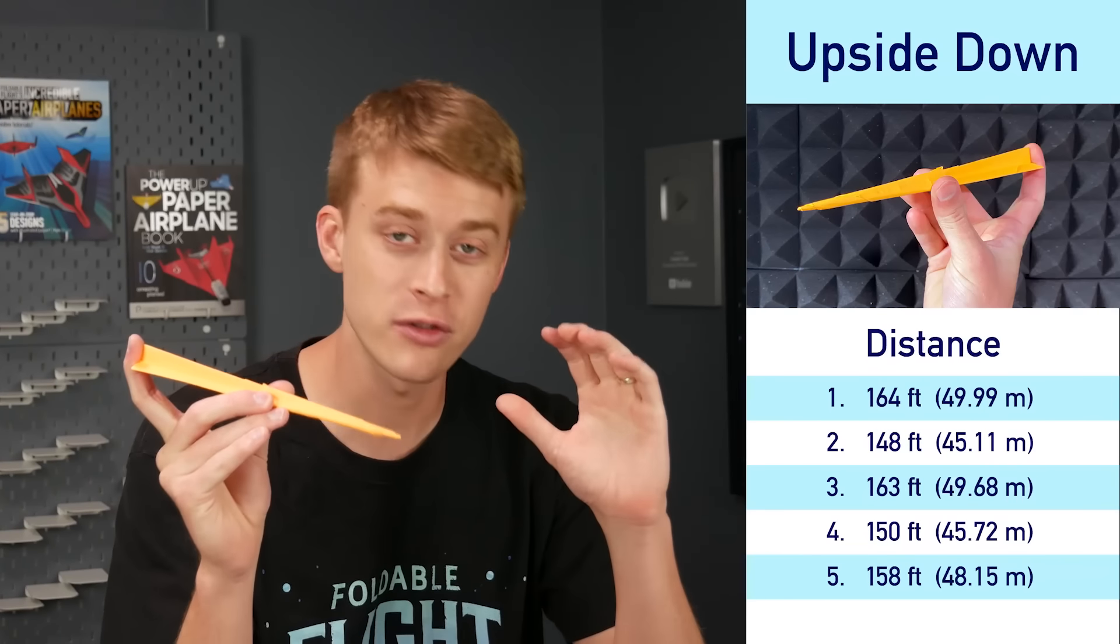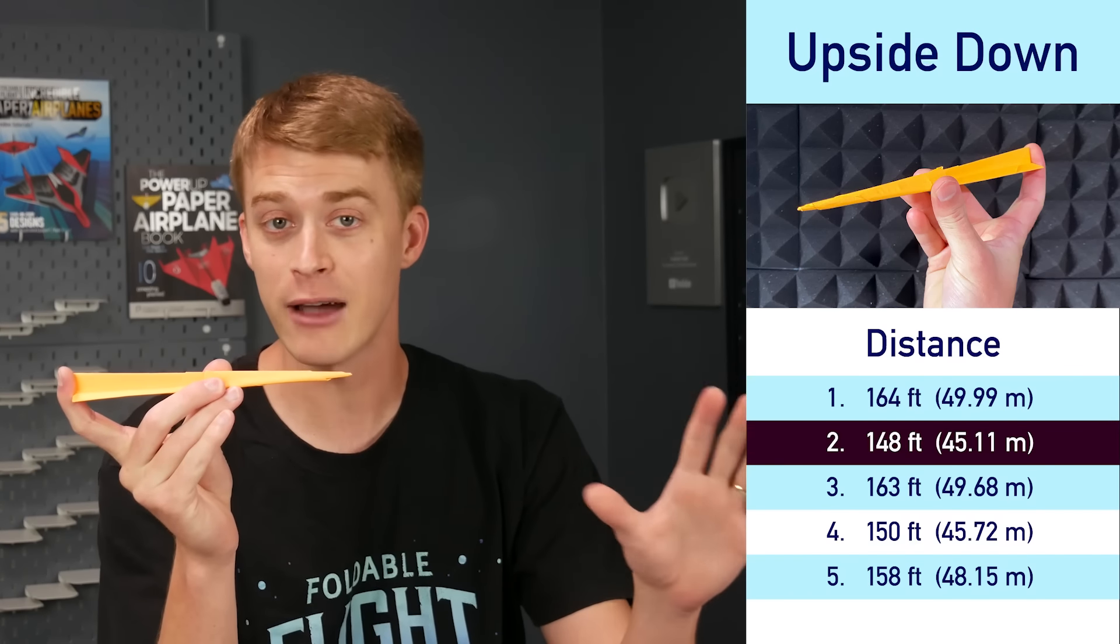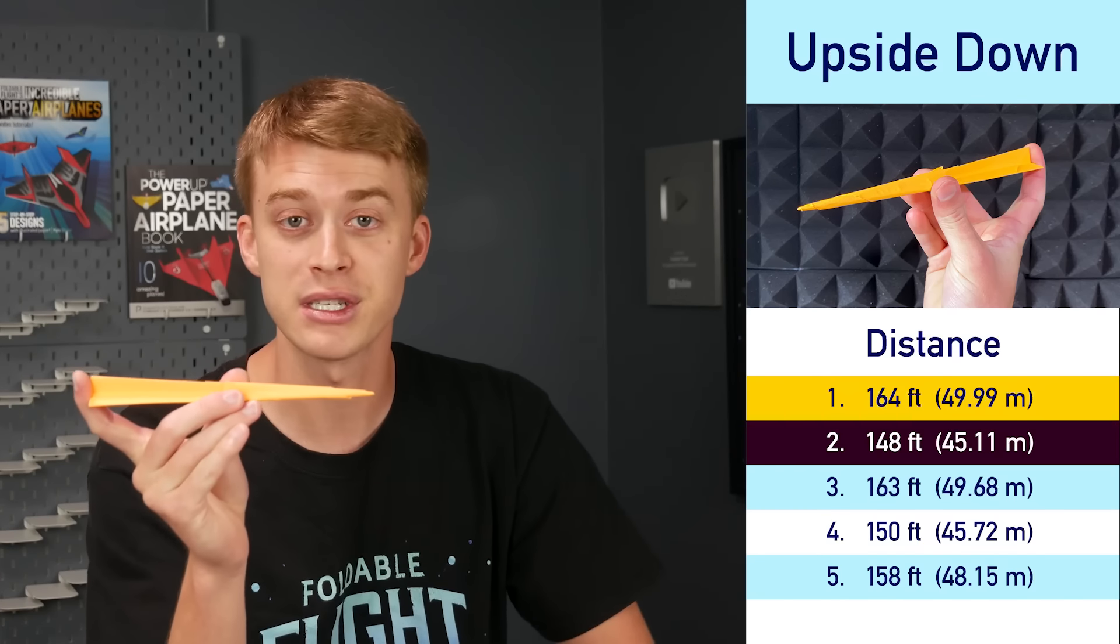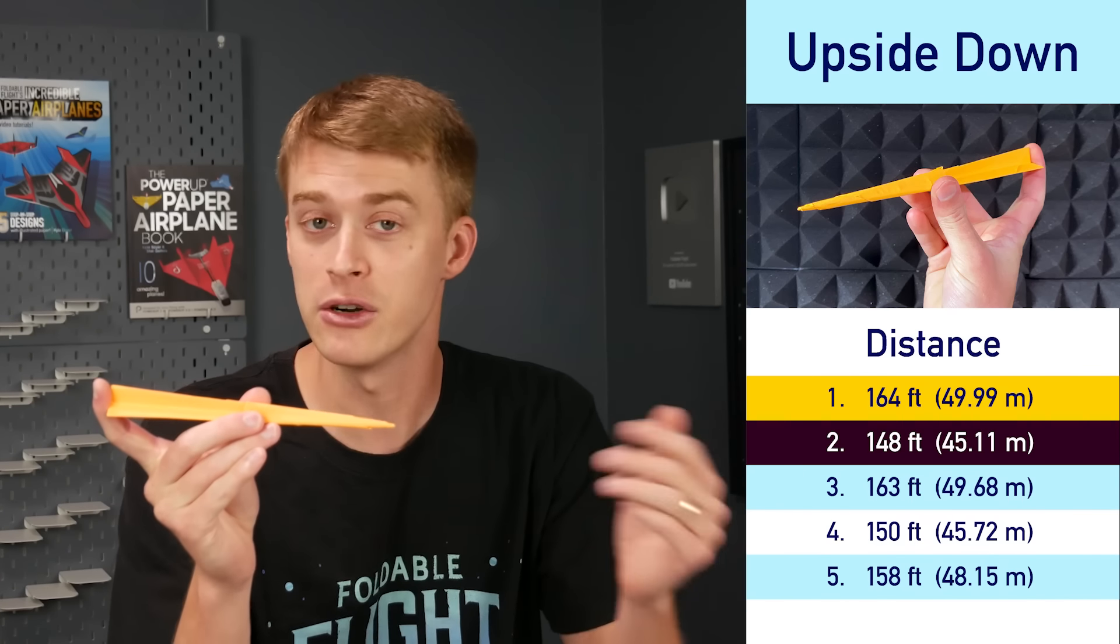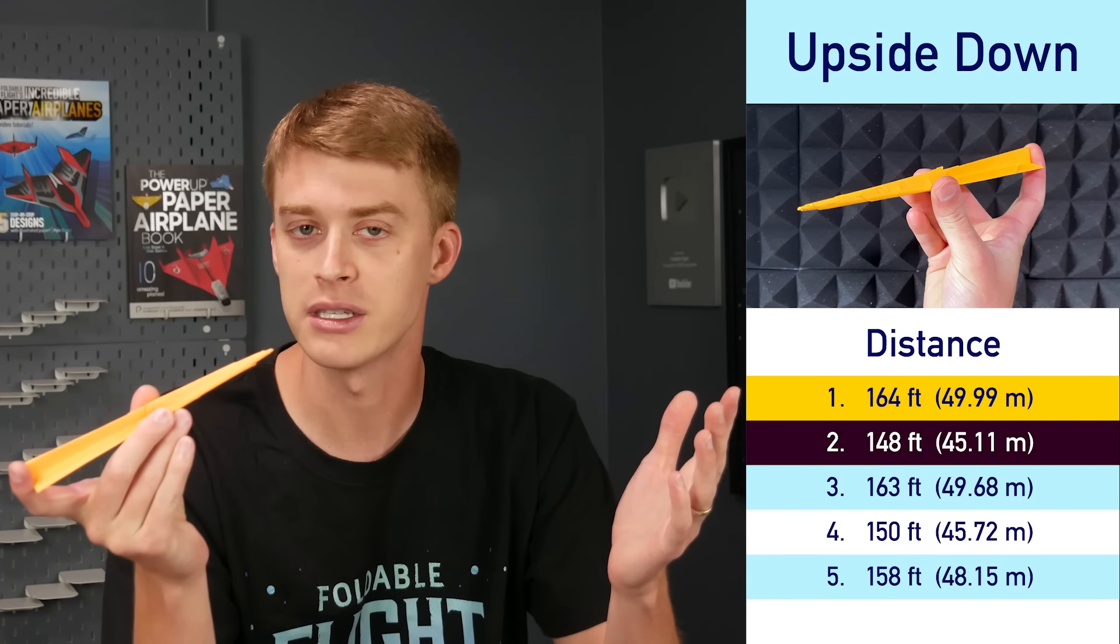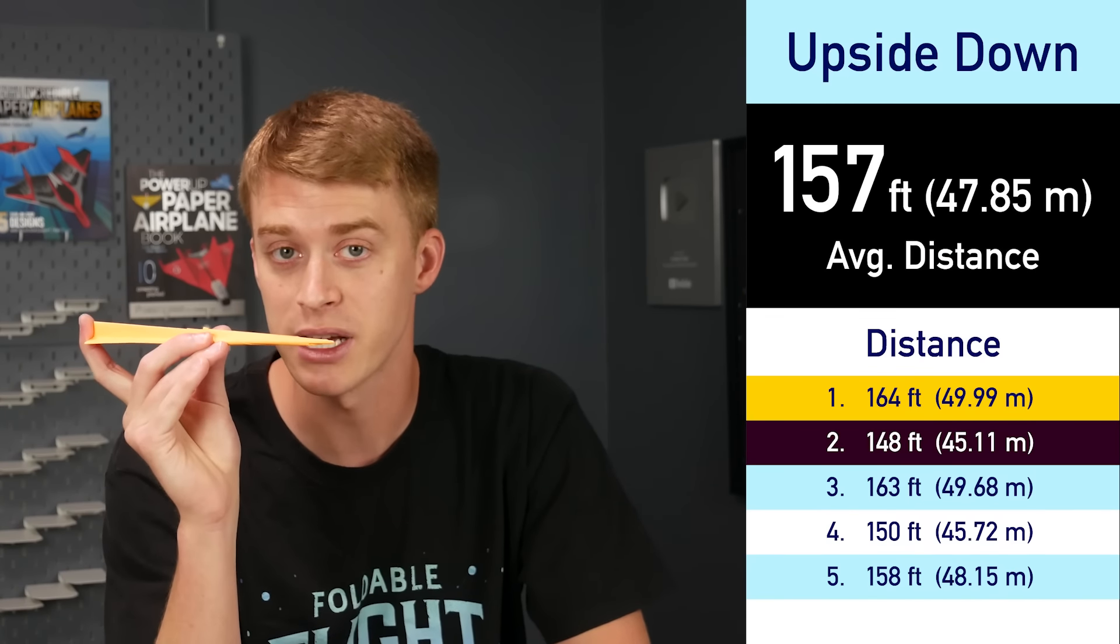But as soon as I flipped the plane over, placed my finger at the back, and threw it the way Loza does, my distance actually improved dramatically. My worst throw using this technique was 148 feet, which was better than my average using my normal technique. And my best throw was all the way up to 164 feet, which is still a far cry from his 200 feet, but I'm not nearly as strong as he is. So I had an average of 157 feet using this technique.